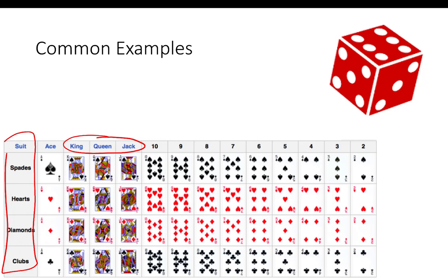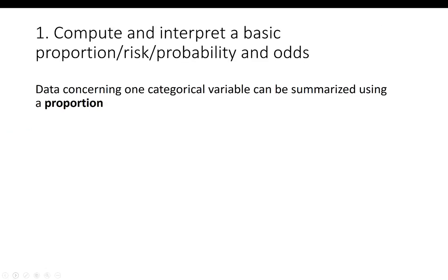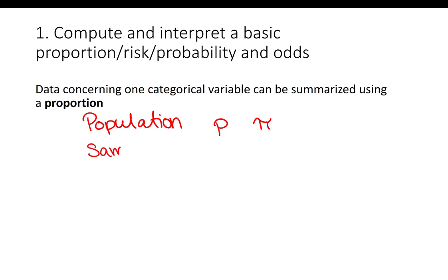Let's start now with our first learning objective: compute and interpret a basic proportion, risk, probability, and odds. Data concerning one categorical variable can be summarized using a proportion. In a population, we use the letter p to denote a population proportion. You may also see the Greek symbol pi used. In a sample, we'll be using the symbol p-hat.